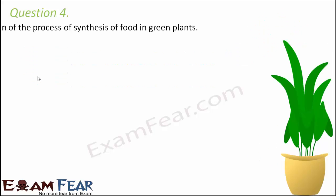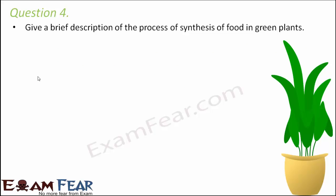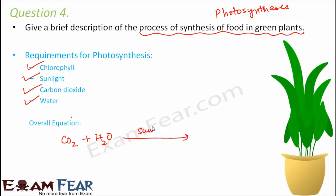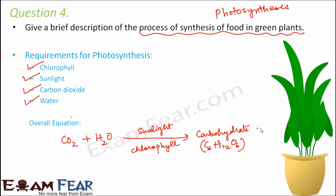Question number four: Give a brief description of the process of synthesis of food in green plants. This process is called photosynthesis. It is a process where plants prepare their food in the presence of sunlight and chlorophyll, using carbon dioxide and water. Carbon dioxide and water combine in the presence of sunlight; chlorophyll absorbs the sunlight and converts it into chemical energy, forming carbohydrates — primarily glucose. This glucose later gets converted into starch and stored in the leaves, while oxygen is released in the process.